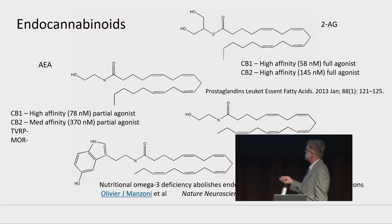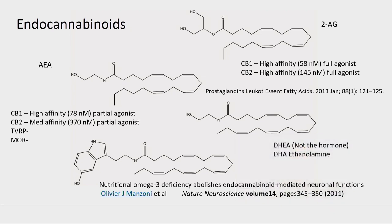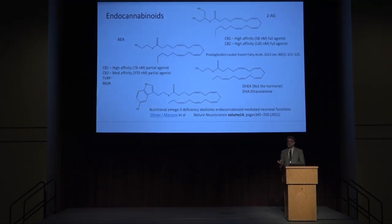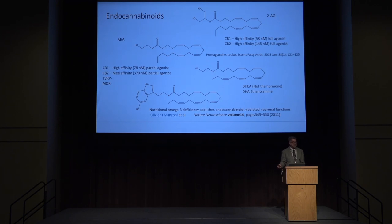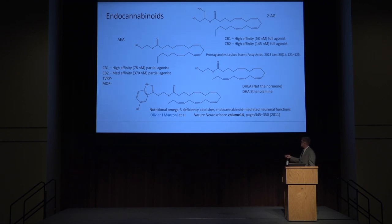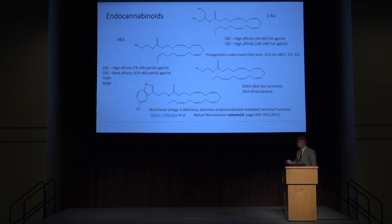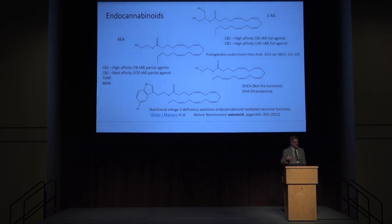One of my favorite researchers, Oliver Manzoni, has done some groundbreaking work with mice. He's shown that mice fed a diet deficient in omega-3s lose neuroplasticity. There is no diet deficient in omega-6s — it doesn't exist. But it's easy to have a diet deficient in omega-3s; that's the standard American diet because of all our consumption of industrial seed oils — I won't call them food oils because they're not. They're industrial seed oils and they're good for one thing: lubrication. Mice lose neuroplasticity in the absence of omega-3s.